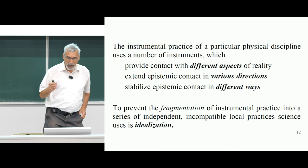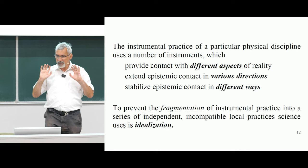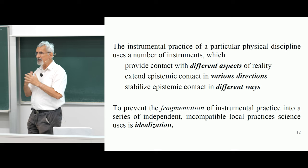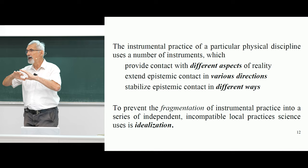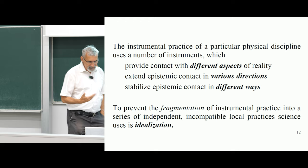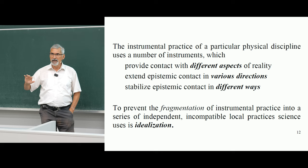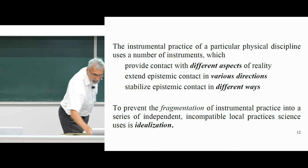The instrumental practice of a particular physical discipline uses a number of instruments. They provide contact to different aspects of reality in various directions, with different ways of stabilization, different scales, and different precision. The data we get are very complicated. To prevent the fragmentation of instrumental practice into a series of independent, incompatible, incommensurable practices where everybody measures their own set of quantities and people can't communicate, physics has an important tool, which is idealization. Basically, we present the outcomes of experiments and measurements in a mathematical language — that is what Galileo told us — and by this means we are able to put them together. So now we come to idealization.